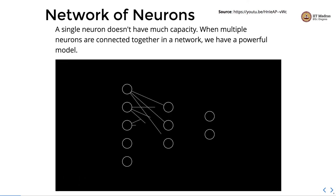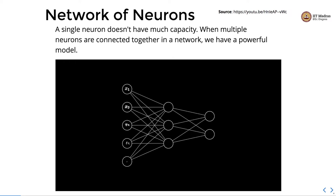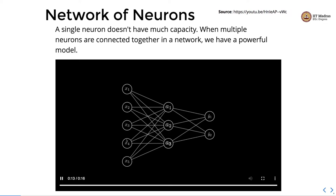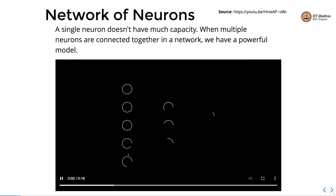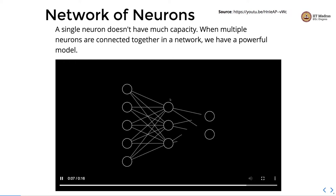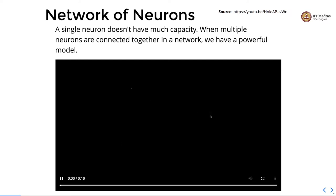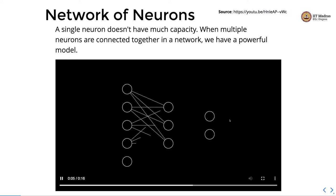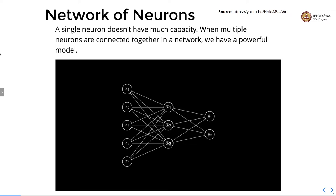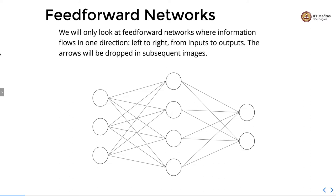A single neuron does not have much capacity. When multiple neurons are connected together in a network, we have a powerful model. In this case there are five inputs x1, x2, x3, x4, and x5 — five different features — connected to three different neurons in the first hidden layer, and the output of these three neurons is connected to two neurons in the output layer, giving two outputs per example. In this course we will only be looking at feed-forward networks where information flows in one direction, from left to right, from input to output.